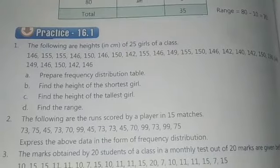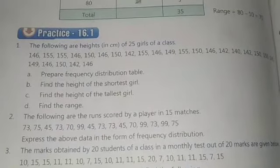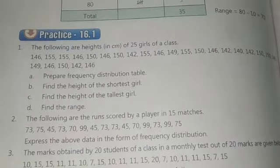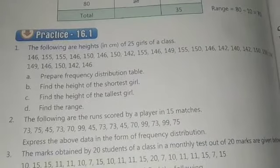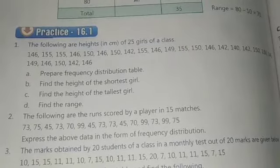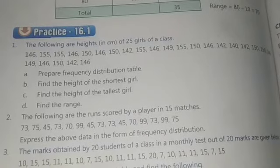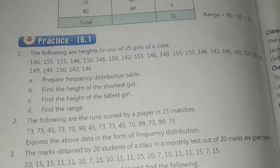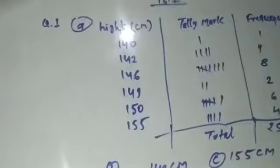In Question 1, we have the heights in centimeters of 25 girls. You have to first make a frequency distribution table — that is what is called a frequency distribution table. Find the height of the shortest girl, find the height of the tallest girl, and find the range. Range means highest minus lowest — whatever the highest data is, subtract the lowest from it.